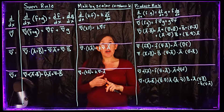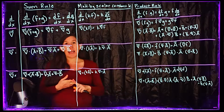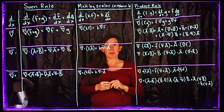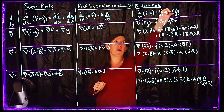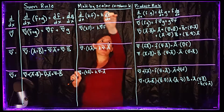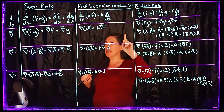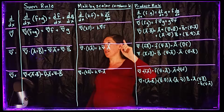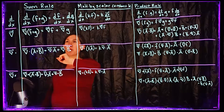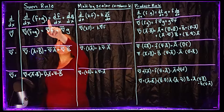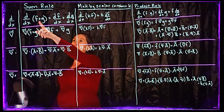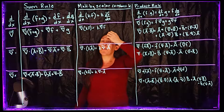Hi everyone. So we've learned about taking gradients, divergences, and curls. In this video, what I want to do is review several properties involving those different types of derivatives. Along the very top row should be the derivatives that you're very familiar with — you can think of all these equations as being functions of a single variable, taking derivatives with respect to x. If we take the derivative of a sum of functions f and g, we have a sum rule, which should be quite familiar to you.